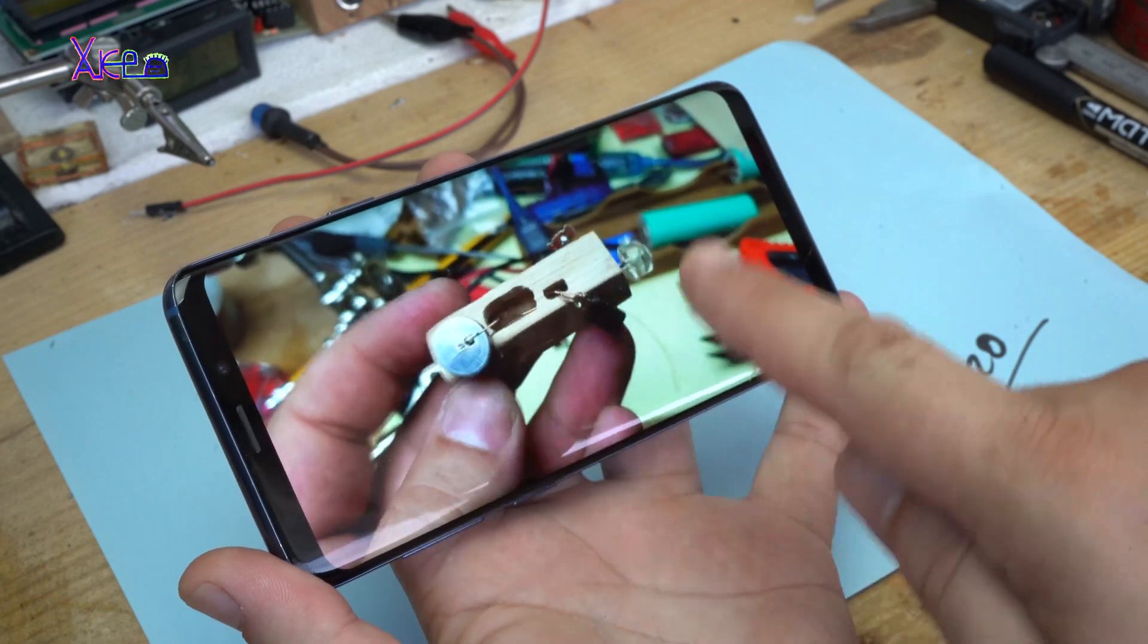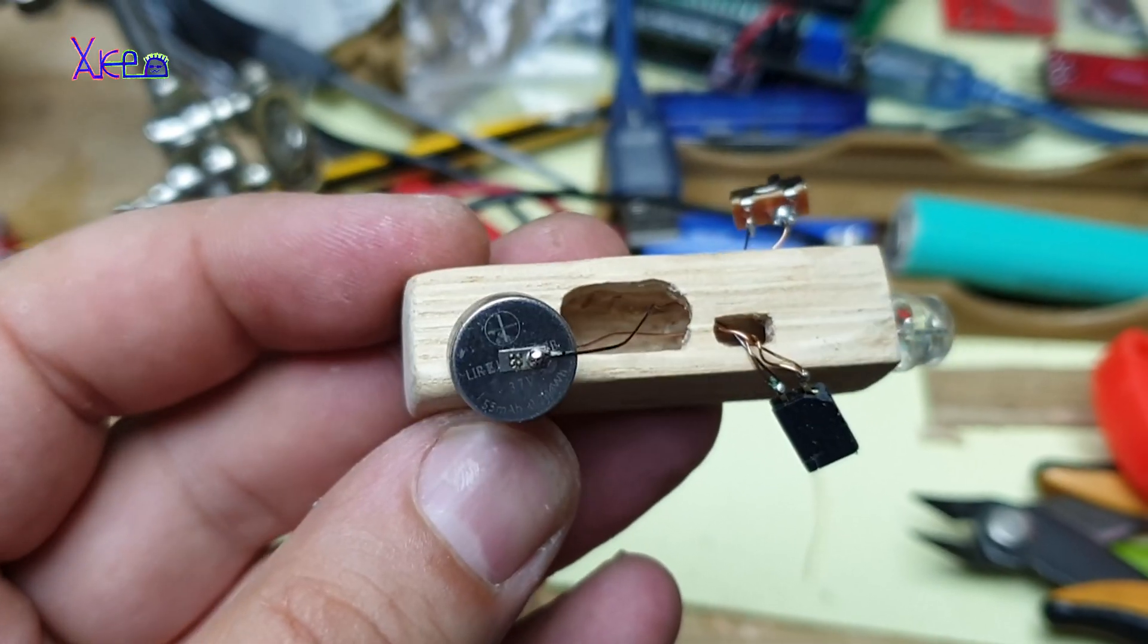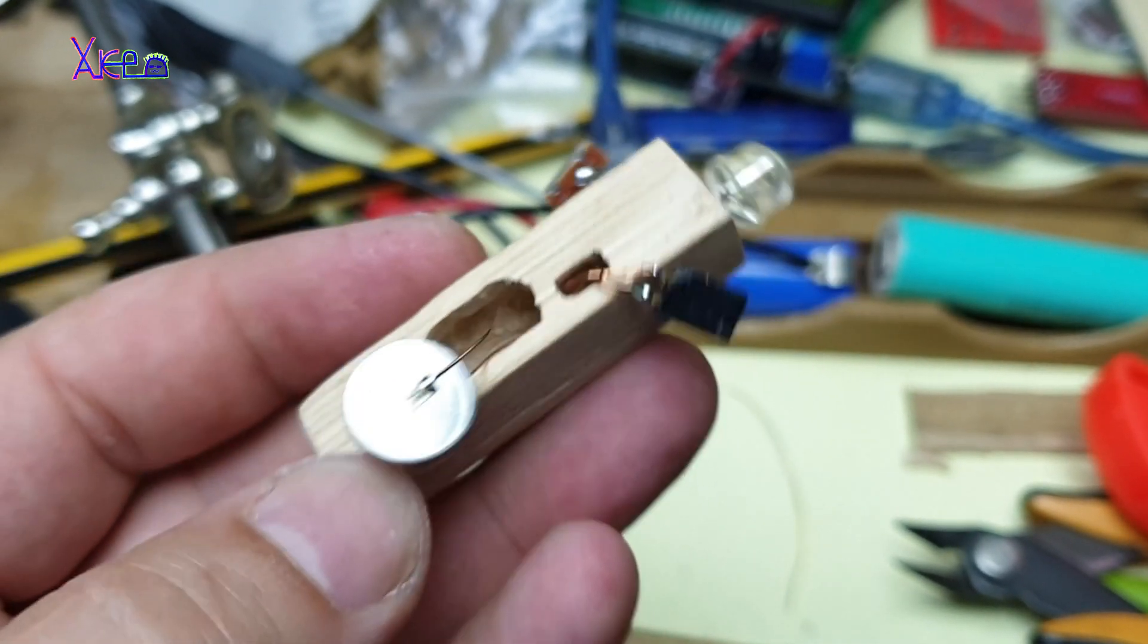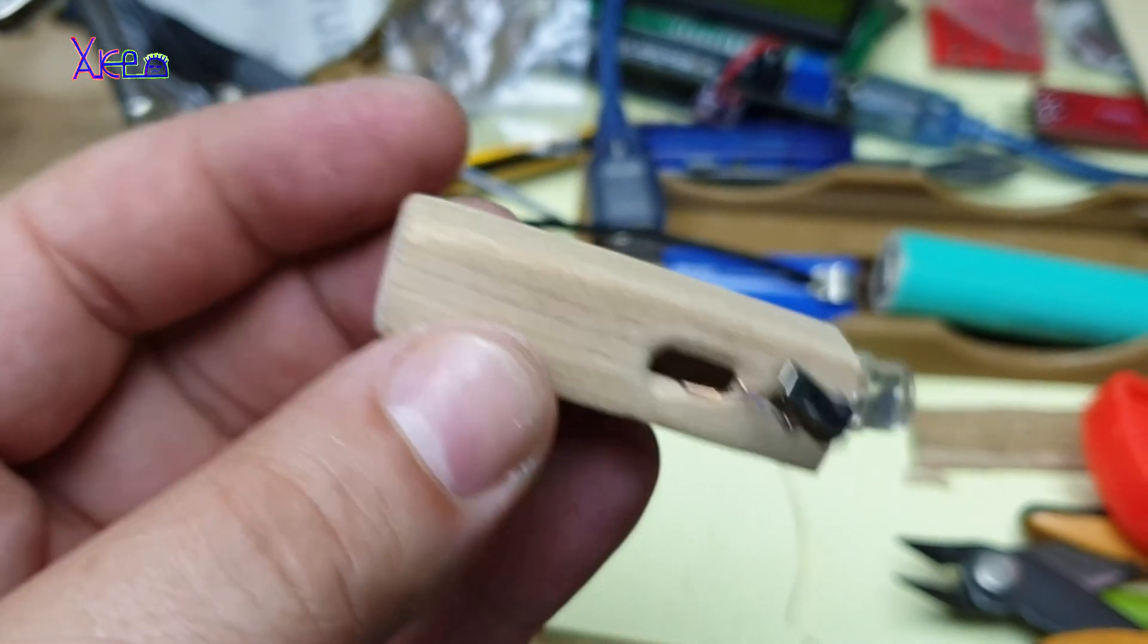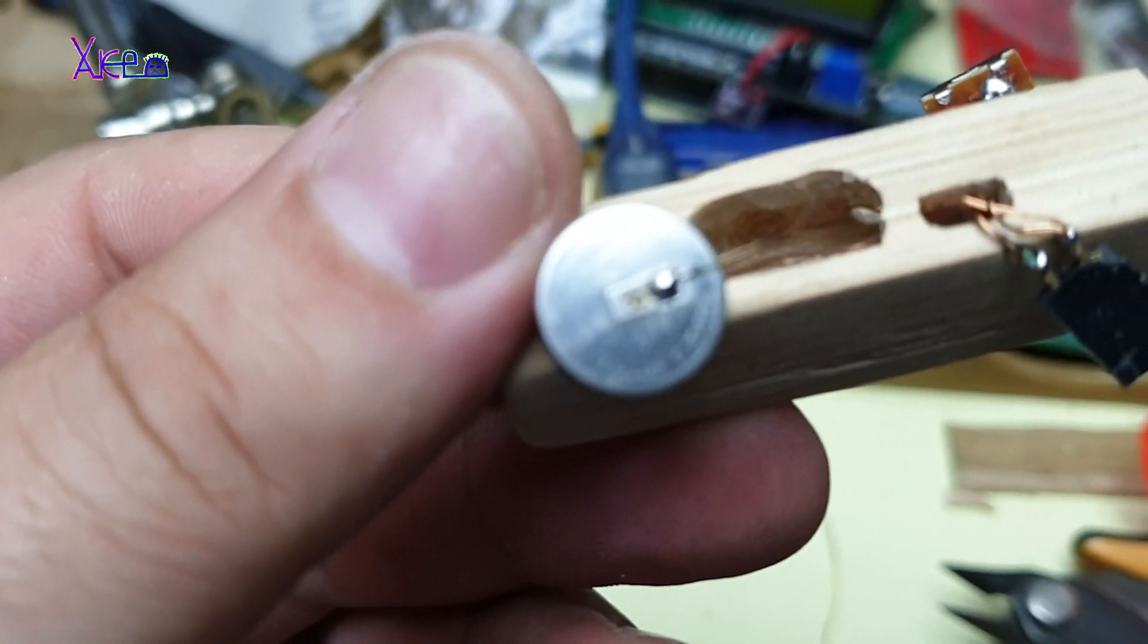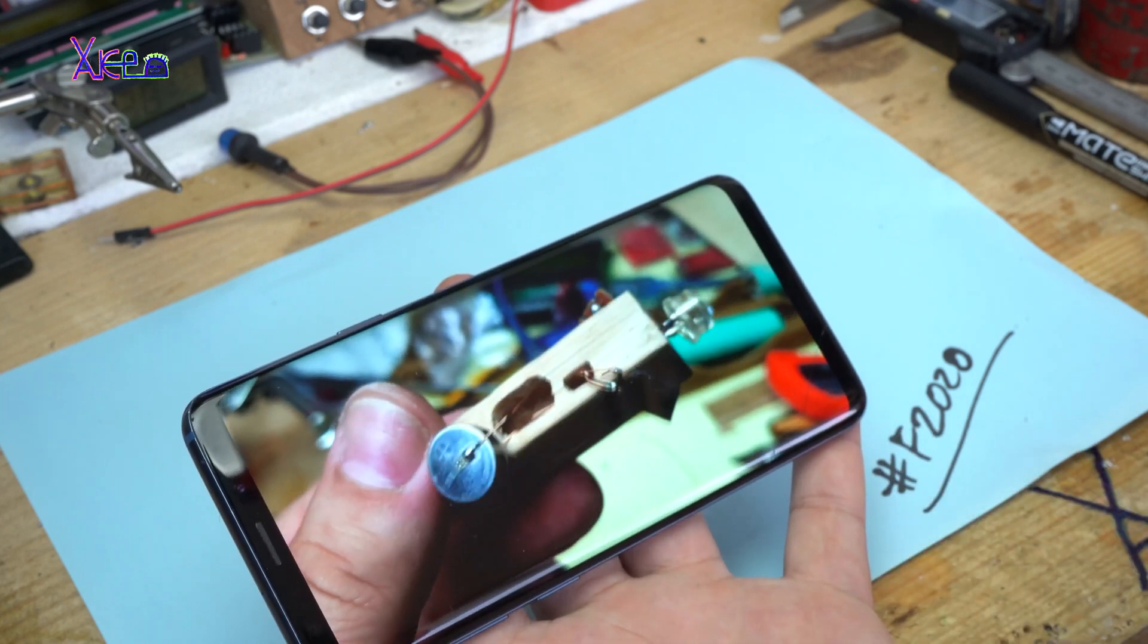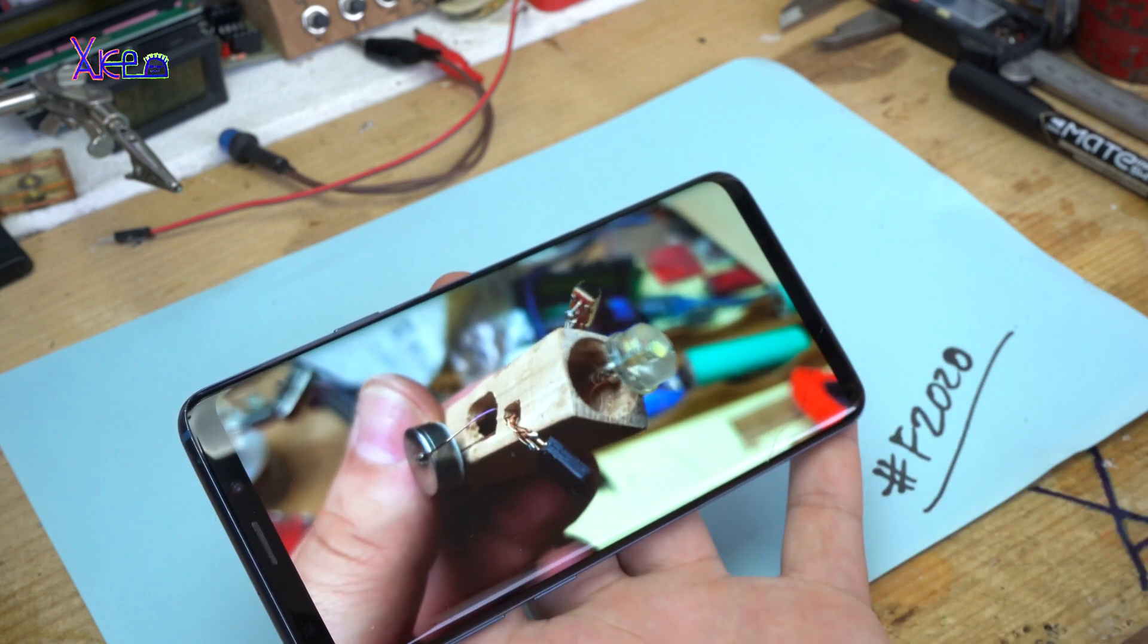And right now, you are seeing how I connected the circuit. It's simple. From battery, the positive and negative wires go to the switch. And on LED I have soldered a resistor, 200 ohms of resistor, just to limit the current. And that's it.